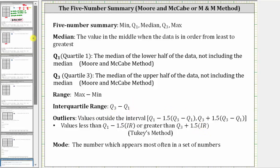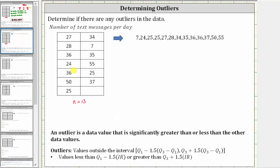So going back to our data, the data has to be ordered from least to greatest, which it already is. Before we can determine quartile one and quartile three, we need to determine the median of the data set, which is the data value in the middle. Because we have an odd number of data values, the median is a data value in the list. Notice how 34 is in the middle, because there are six data values to the right and six data values to the left of 34 when the data is ordered from least to greatest. So this is the median.